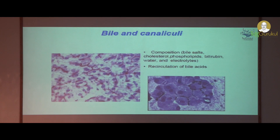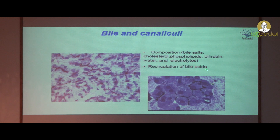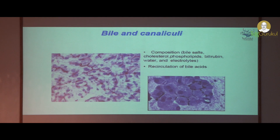This is to show the bile canaliculi through which bile flows and enters the bile ducts. The bile is composed of bile salts, cholesterol, phospholipids, bilirubin, water, and electrolytes. There is fine recirculation of bile acids. As bile enters through bile acids to the bile ducts into the intestine, it gets absorbed back into the liver through the portal vein and gets recirculated. If there is any recirculation of the drug, the exposure will be more.